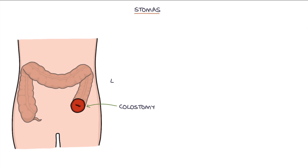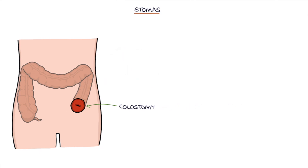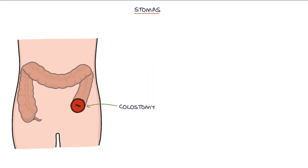A colostomy is where the large bowel or the colon is brought onto the skin. Colostomies drain more solid stools as much of the water is reabsorbed in the remaining large intestine. Colostomies can be flatter to the skin compared with ileostomies, which have to have a spout, as the solid contents are less irritating to the surrounding skin. Colostomies are typically located in the left iliac fossa.